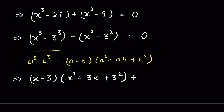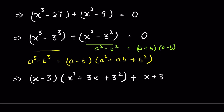Then the remaining part x² - 3² is in the form a² - b², the difference of squares, which factors as (a + b)(a - b). So we write it as (x + 3)(x - 3).